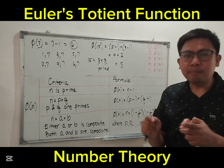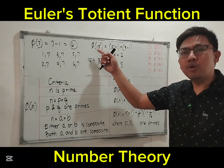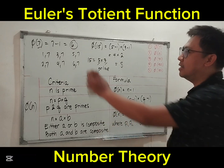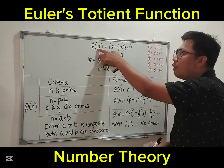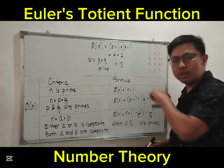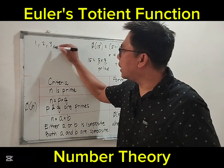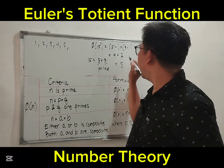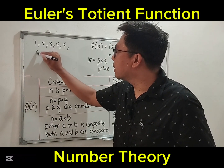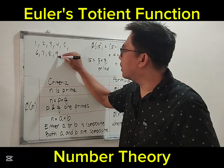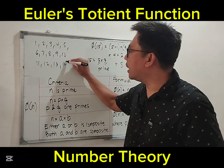Let's verify by writing the numbers relatively prime to 15. We list all numbers from 1 up to n minus 1, so up to 14: 1, 2, 3, 4, 5, 6, 7, 8, 9, 10, 11, 12, 13, and 14. We will cross out numbers that are not relatively prime to 15.